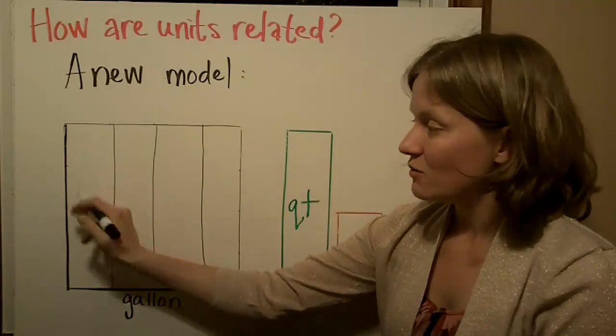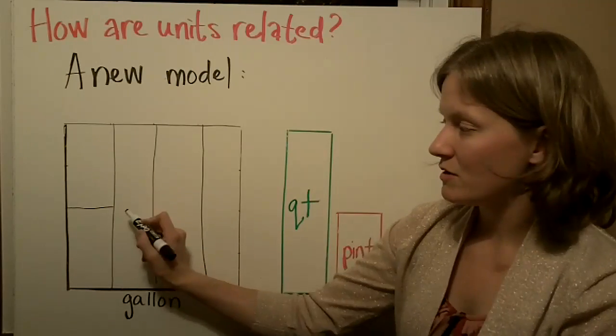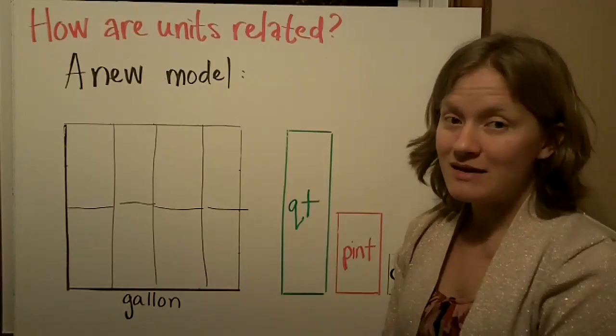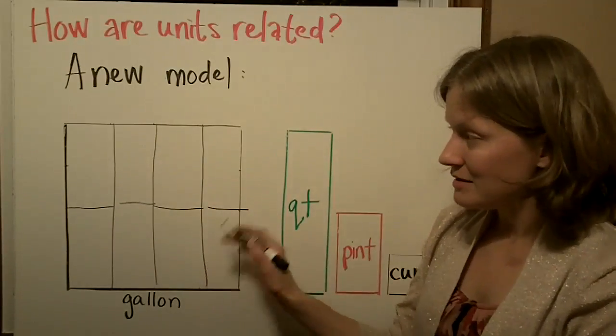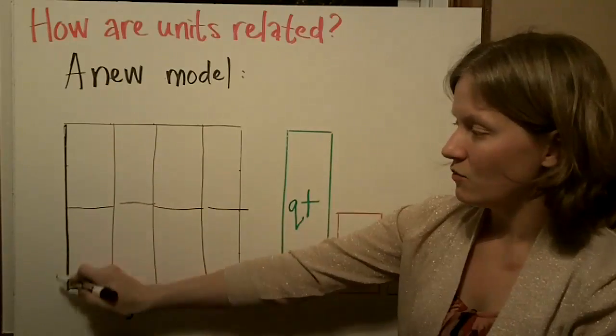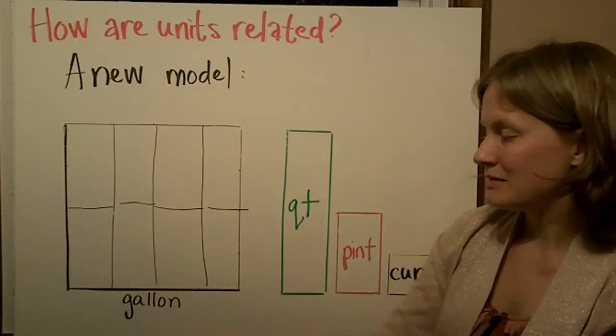Then if I divide each quart in half, I've broken each quart into two pieces. Now we have eight pints in one gallon, or two pints in one quart.